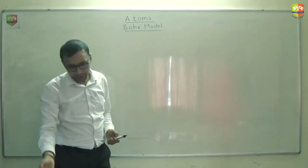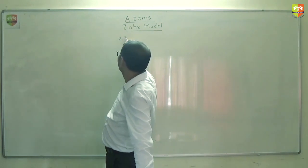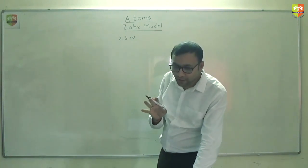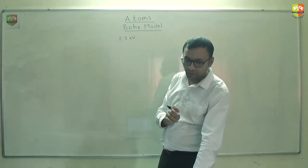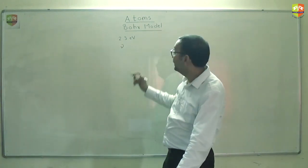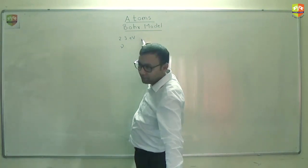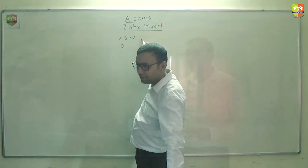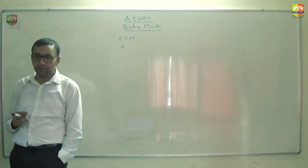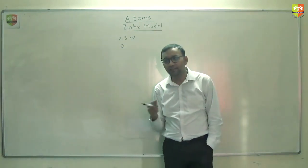Let us solve few questions on it. The difference of 2.3 electron volt, there is a difference between two energy levels in an atom. You have to find out what frequency will be emitted if electron makes a transition from first level to the other level. Apply Bohr's third postulate. What does it say? Differential energy will be equal to a photon emitted and photon's energy is h into mu.